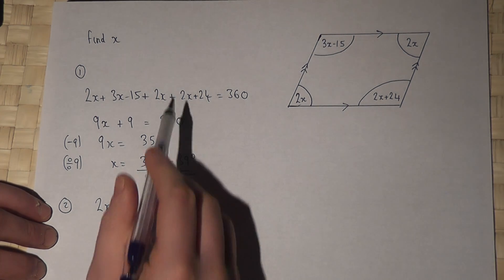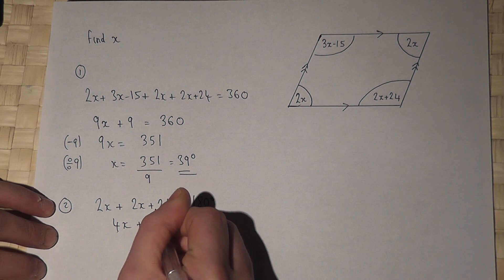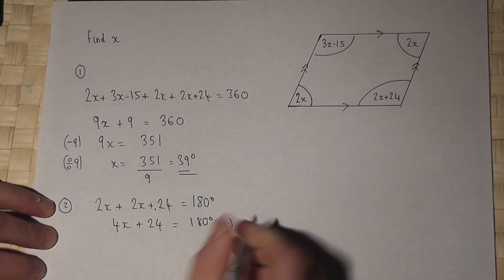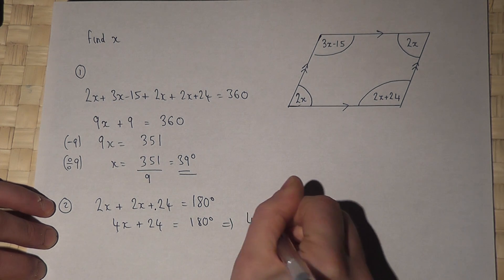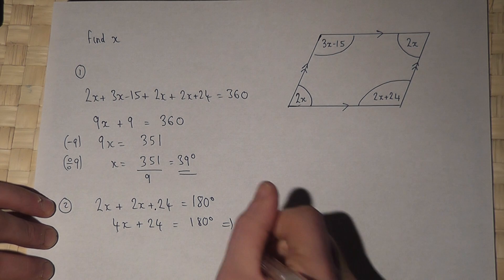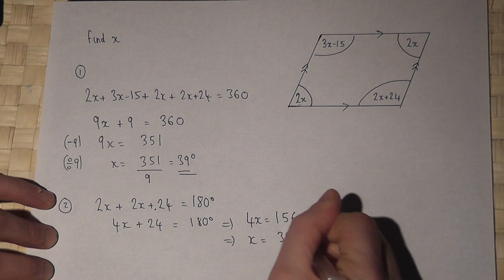Now this is a simpler equation to solve than the one above. 4x plus 24 equals 180. So if I now take away 24, 4x equals 156. If I then divide by 4, I still get the same answer, that x equals 39 degrees.